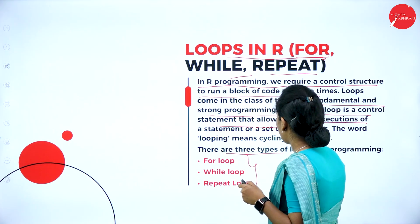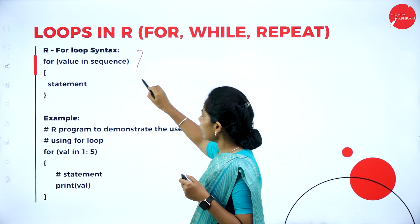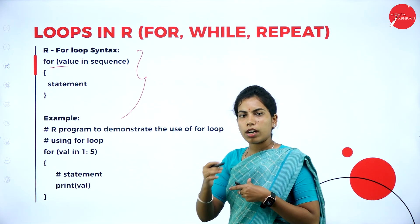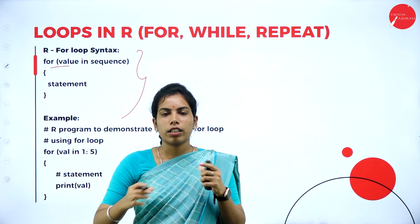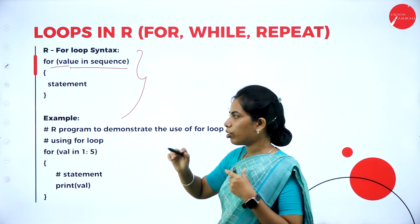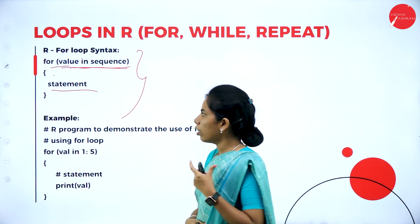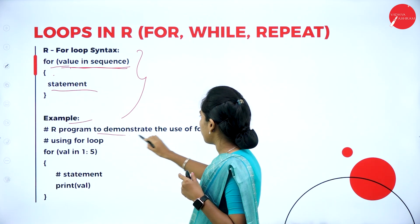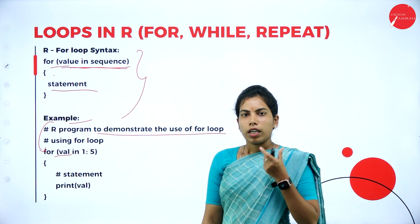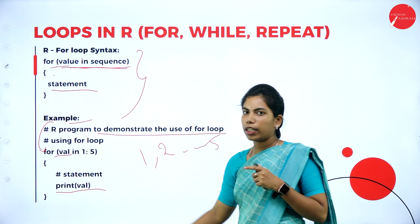R provides three basic loops: for loop, while loop, and repeat loop. For the for loop, the syntax is: for (value in sequence) { set of statements }. It generates a sequence of characters or numbers. For example, to demonstrate a for loop: for (value in c(1, 2, 3, 4, 5)), it will print values one through five sequentially. This is how the for loop works.